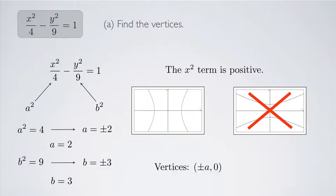My vertices are plus or minus a comma 0 — the x coordinate is plus or minus a and the y coordinate is 0. So in this case, my vertices are plus or minus 2 comma 0.